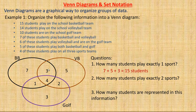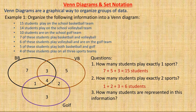The exactly two sports students are where pairs of ovals overlap — but not the center four, who play all three. So we add the three in basketball-volleyball only, the one in basketball-golf only, and the two in volleyball-golf only. That gives only six students that play exactly two sports. And the four in the center play all three.